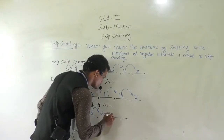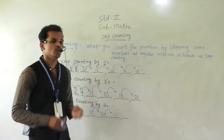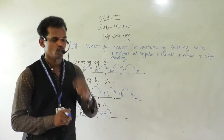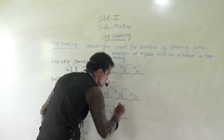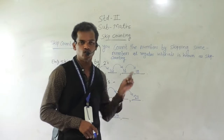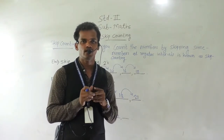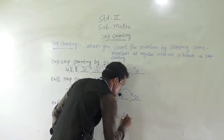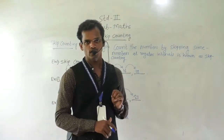Then again add 4 into 20: 21, 22, 23, 24. Then again add 4 into 24: 25, 26, 27, 28. So this is the example of skip counting by 4.